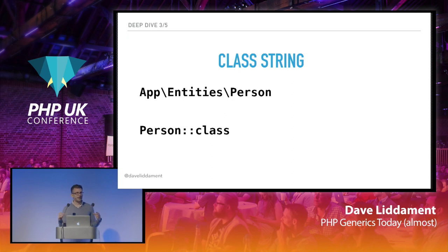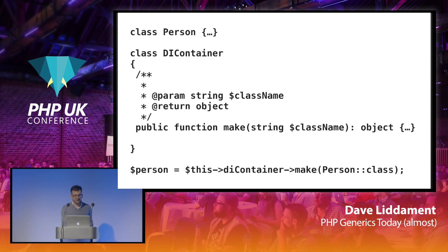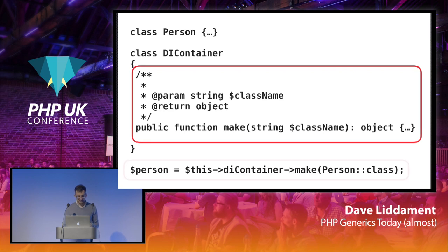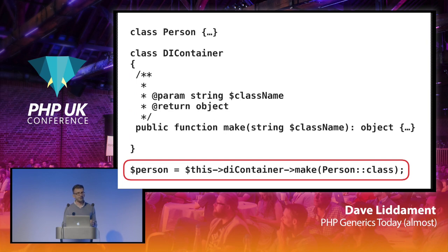There's also something called a class string. We can represent classes either by their fully qualified name or by taking the class name and doing ::class, which results in the same string. Imagine we have a dependency injection container with one method called make — we pass in the name of a class, and it returns an instantiated version of that object. If we call this with Person::class, we expect it to return a Person object. The issue is there's no way a static analyzer can assert that has really happened — the best we know is that person is of type object.